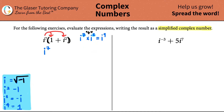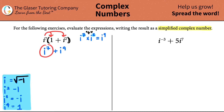So right now we're dealing with i to the seventh plus i to the ninth. We have to simplify — we can only have a number and then just one i. So let's simplify i to the seventh first. What I like to do is work in terms of i to the fourth, mainly because i to the fourth always equals one, and when you multiply by one it cancels out.